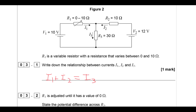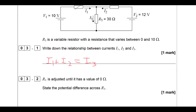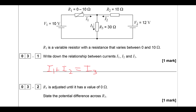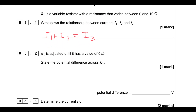R1 is adjusted until it has a value of 0 ohms. State the potential difference across R3. I'm going to focus on the left-hand loop of the circuit. When R1 is not zero, the 10 V is divided between the two resistors - a potential divider. When R1 becomes zero, the 10 V is no longer divided between two resistors; the 10 V is just across R3. So the potential difference across R3 is 10 volts.